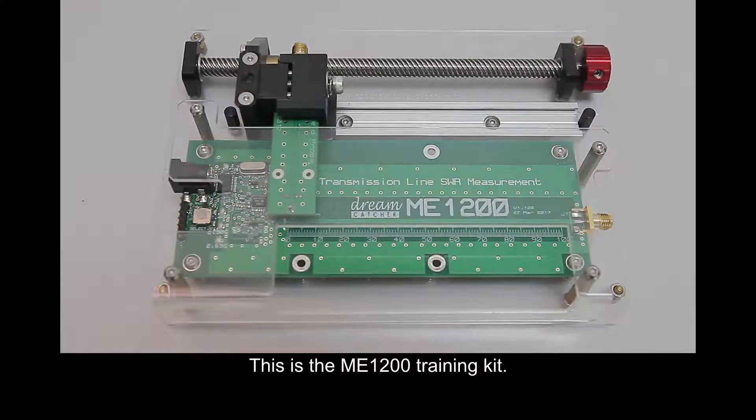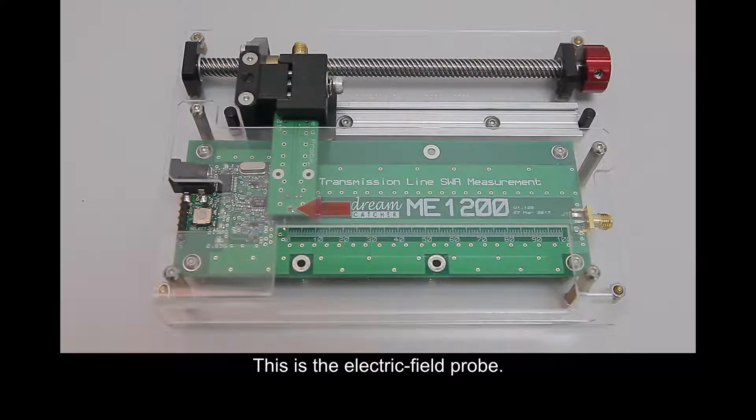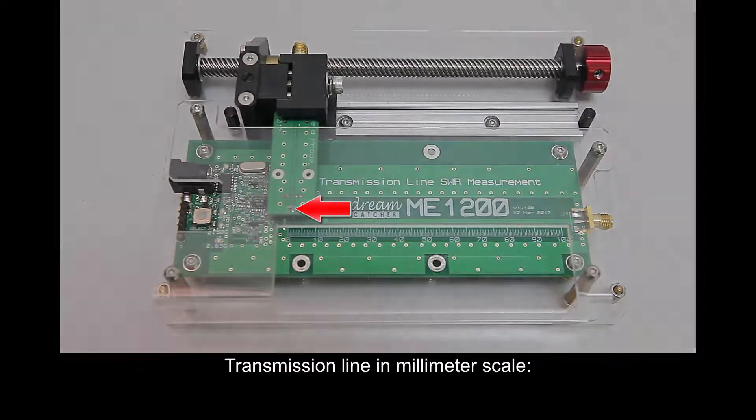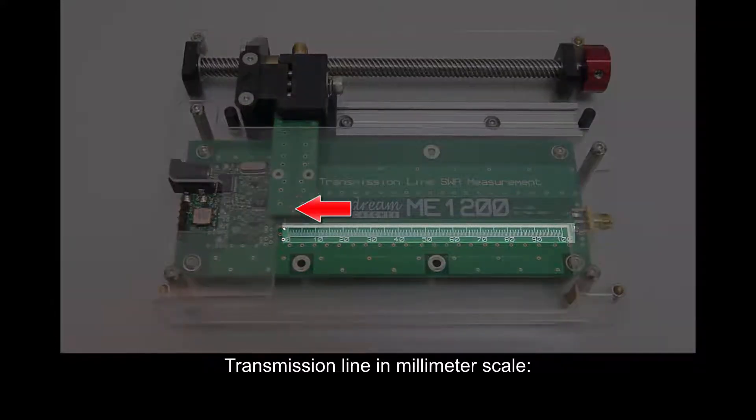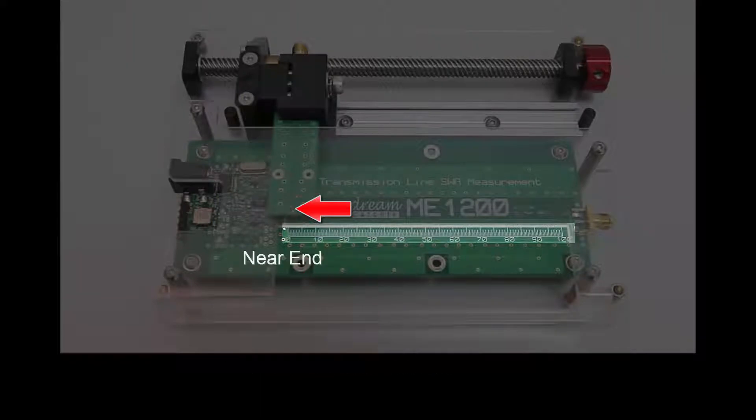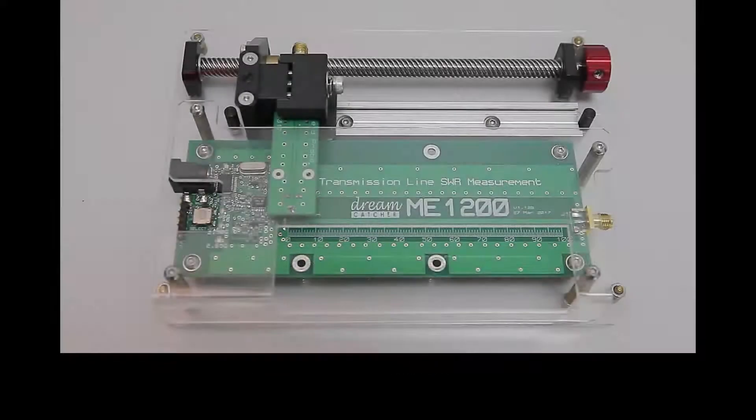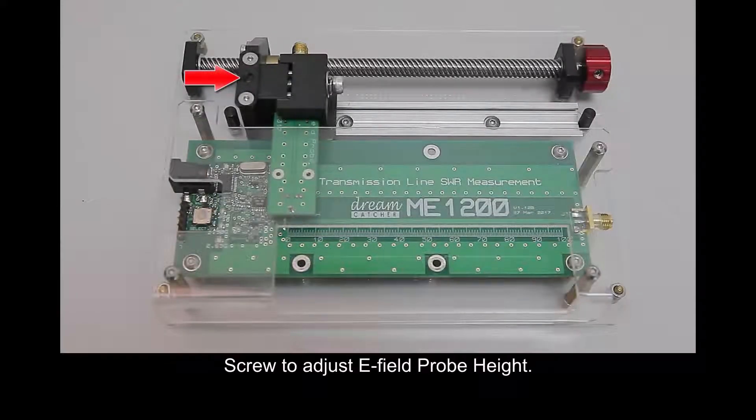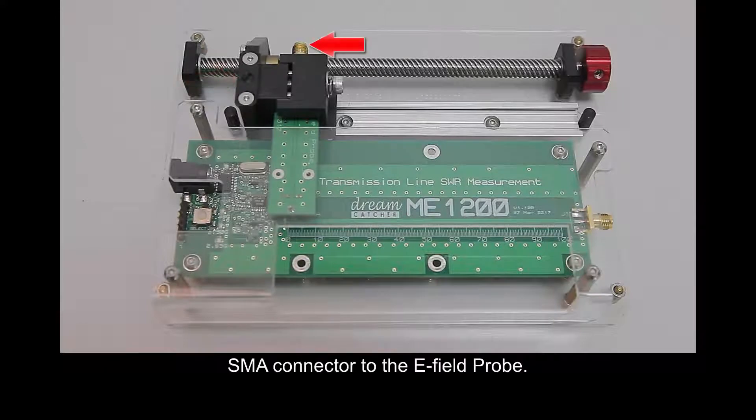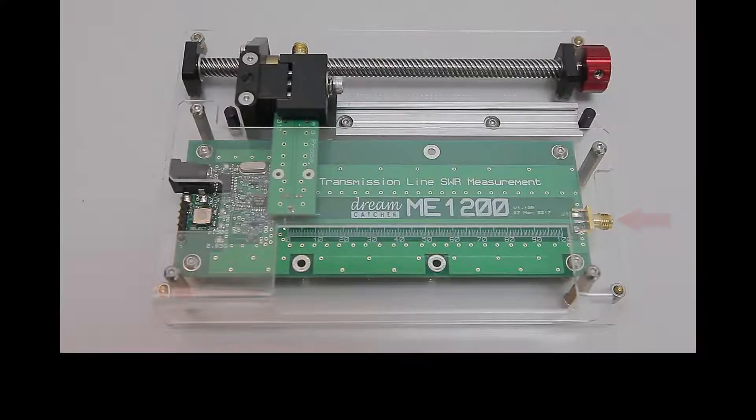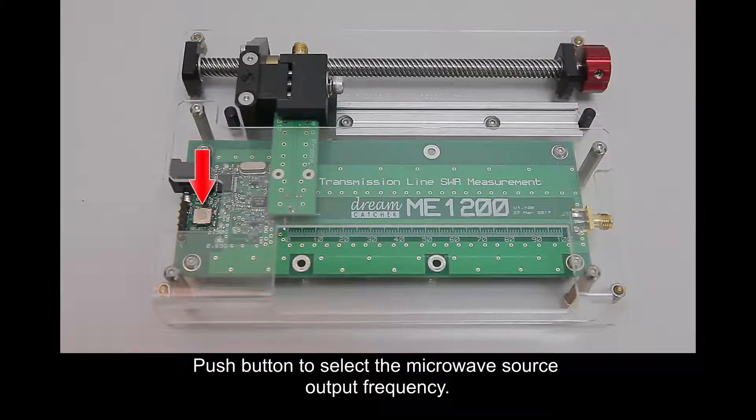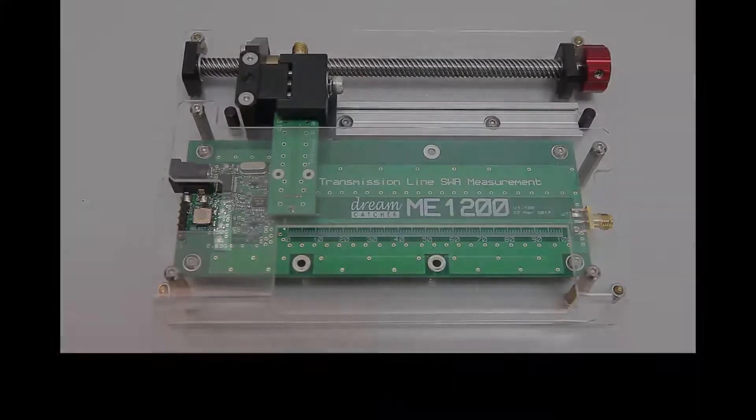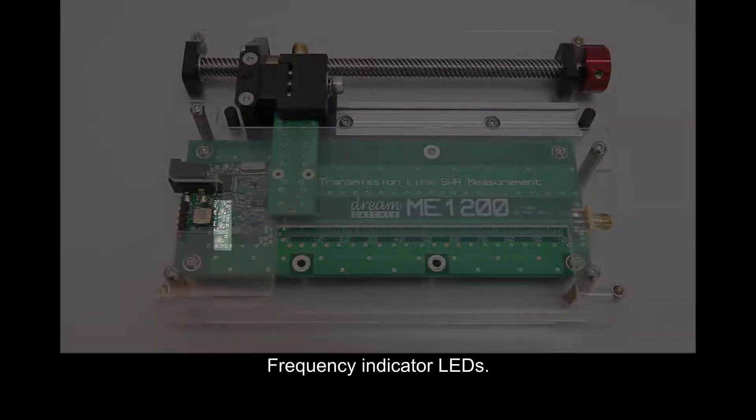This is the ME1200 training kit. This is the electric field probe. Transmission line in millimeter scale. Near end. Far end. Screw to adjust E field probe height. SMR connector to the E field probe. SMR connector at far field. Push button to select the microwave source output frequency. Frequency indicator LEDs.